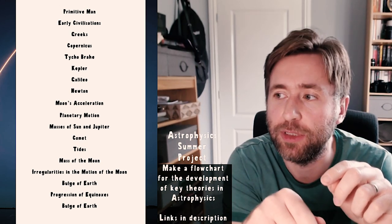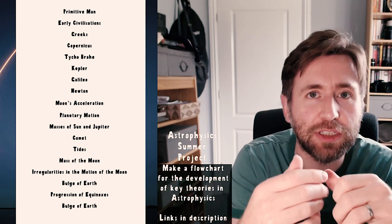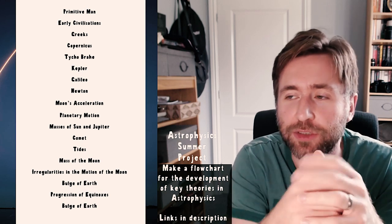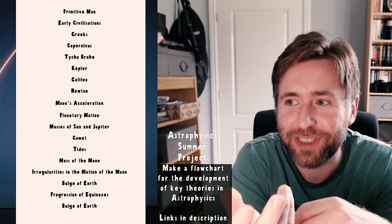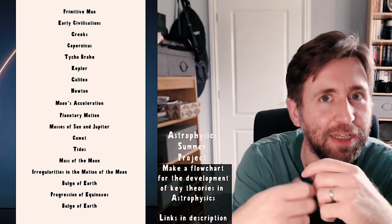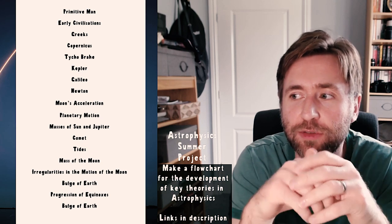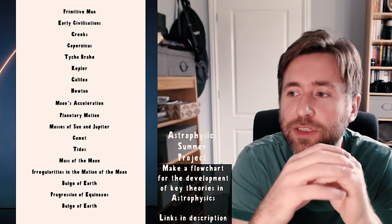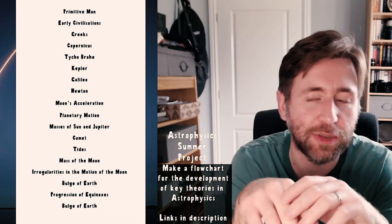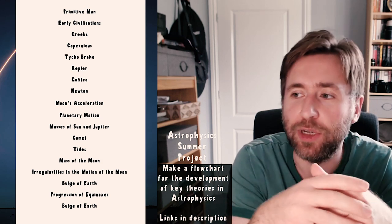The headings are also in the description - there's a link to a Google Drive document. Here they are: first, primitive man - what did they think about space? Early civilisation - before the Greeks. Then the Greeks - what did they know about astronomy? Copernicus - what did he figure out? Tycho Brahe - what was his contribution? Then Kepler, Galileo, and Newton. At Newton it stops being about individual scientists. You can search all these things up and add detail, and I want to see you making links between the different theories.